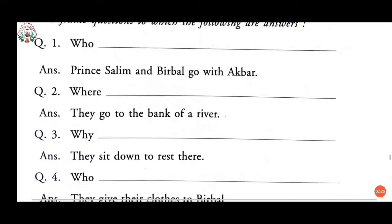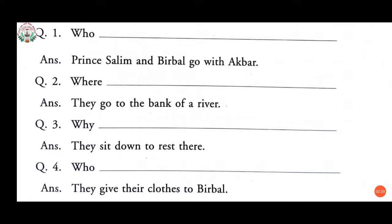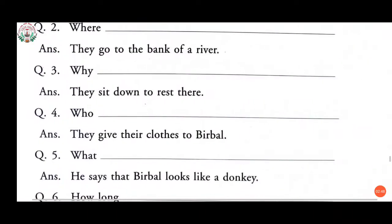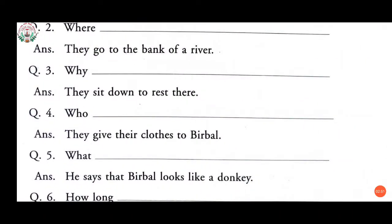So the question becomes: Who goes with Akbar? Likewise, the second answer is 'they go to the bank of a river,' so the question is: Where do they go? Third answer: 'they sit down to rest there,' so the question is: Why do they sit down there? Fourth answer: 'they give their clothes to Birbal,' so the question becomes: Who do they give their clothes to?